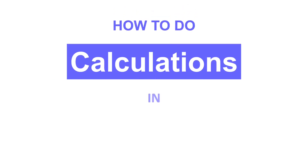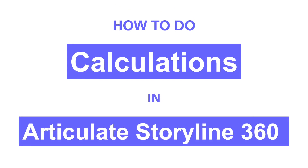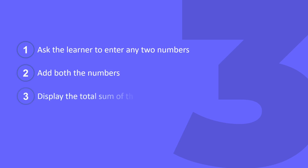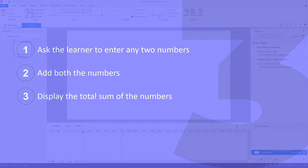Hi there! In this video, you will learn to do calculations in Articulate Storyline 360. We will do three things: on a slide, we will ask the learner to enter any two numbers. Once the learner enters the numbers and clicks the submit button, we will add both numbers and then display the total sum on the same slide. Let's get started.